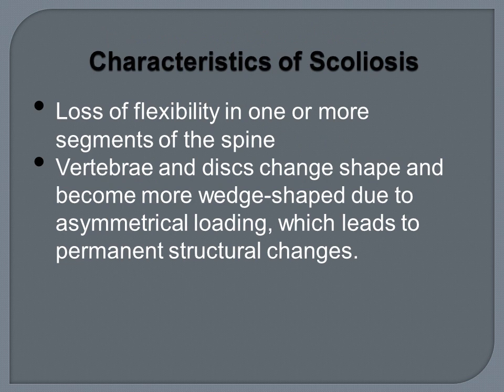Characteristics of scoliosis include side deviation and rotation of the spinal segments, which can lead to not only loss in flexibility, but also structural changes in the vertebrae and the discs. They become more wedge-shaped due to asymmetrical loading, which leads to permanent structural changes as the individual develops.